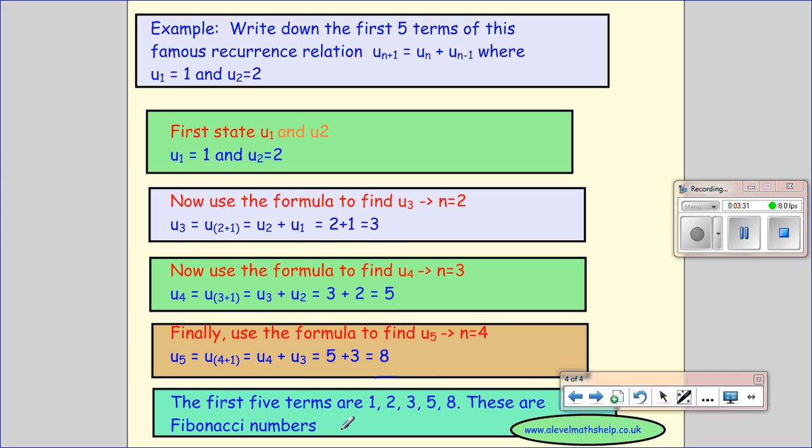So Fibonacci's numbers are created by adding the two numbers before the term you're trying to create. So the 5 comes from 3 plus 2, the 8 comes from 5 plus 3, the 3 comes from 2 plus 1. Okay, that's all I'm going to do on that. I hope that's helpful. Bye.